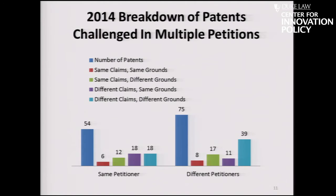The other side is a different petitioner — typically a different defendant involving the same patent, filed typically on the same day by the plaintiff. There you see 75 patents were challenged by a different defendant. Again, about a third of all of them involve the same claims and same or different grounds. The different grounds very often involve a 102 being made into a 103 — that's the most common situation.